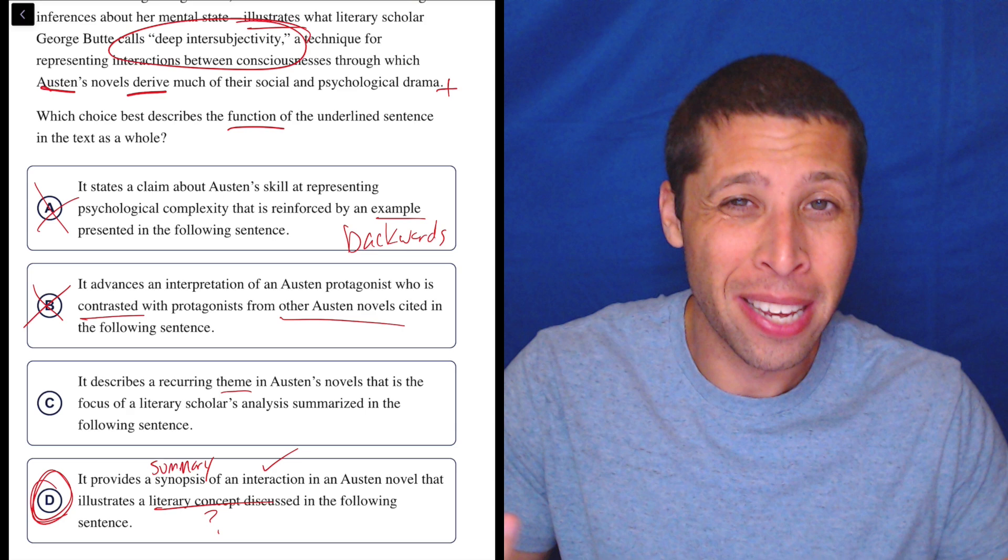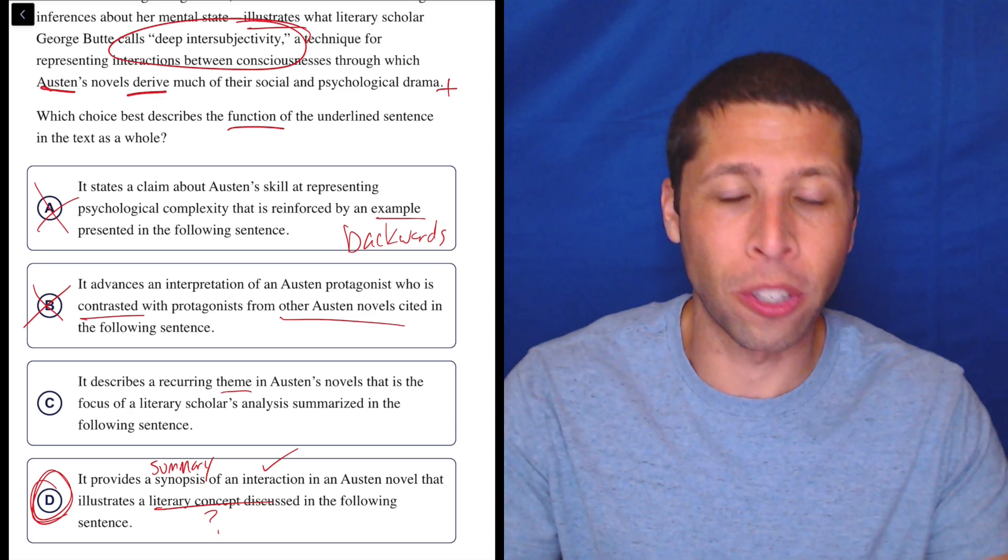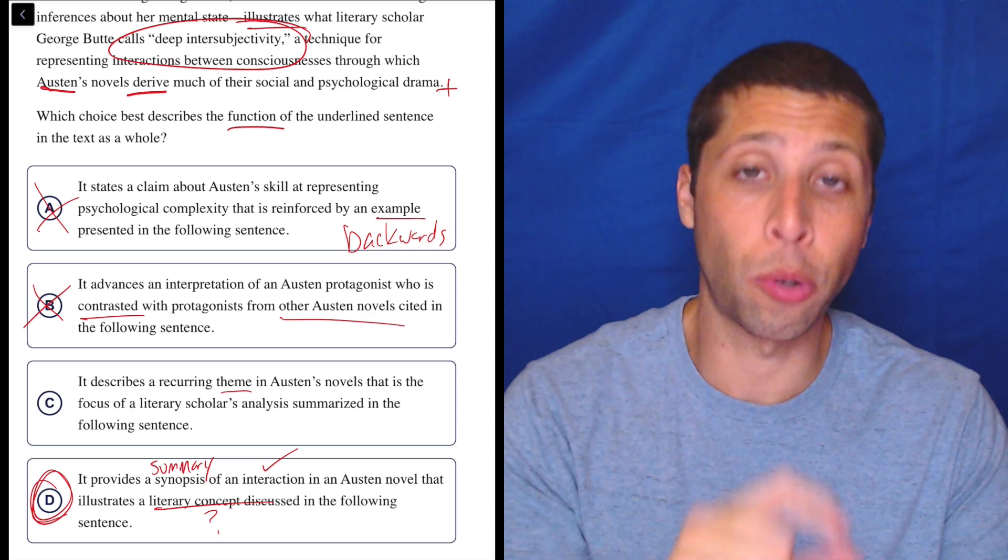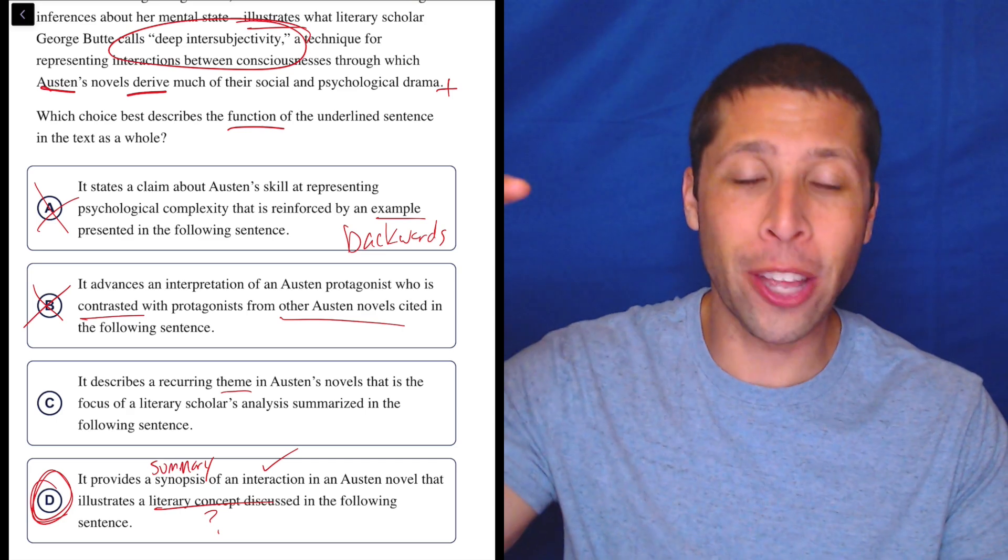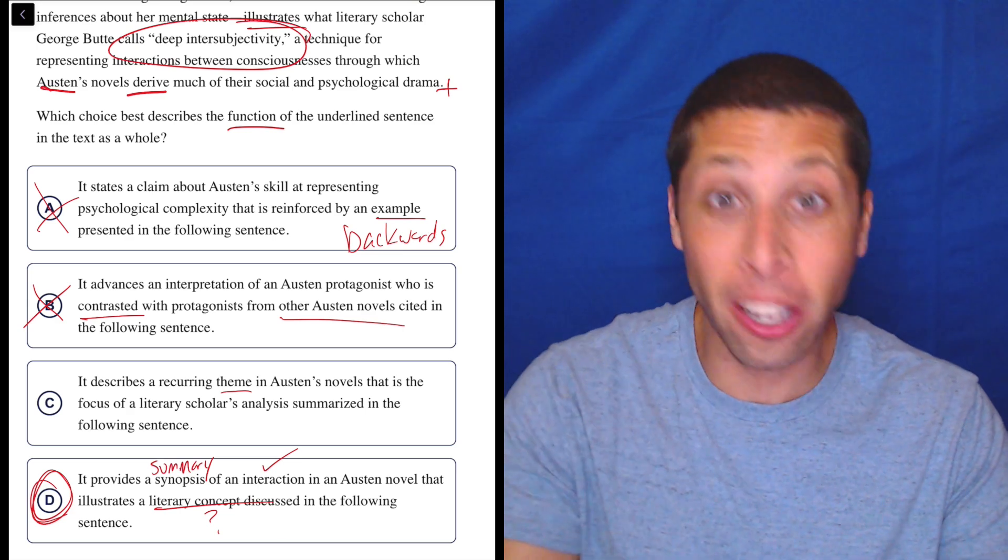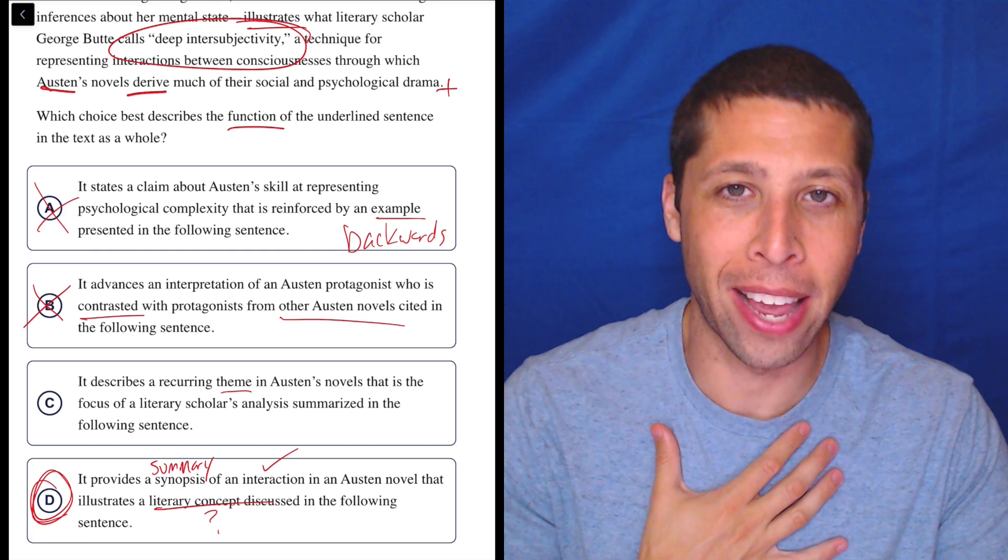Like I said, it's wrong because it's not really a theme. It's more like - like I said in D, it's an interaction. That's a much better word to describe what's happening. And by turning those little pieces of choice D into questions that I could then go point to the words in the passage, in the underlined portion, that just match with that, that's how I get confidence that I'm doing the right thing.